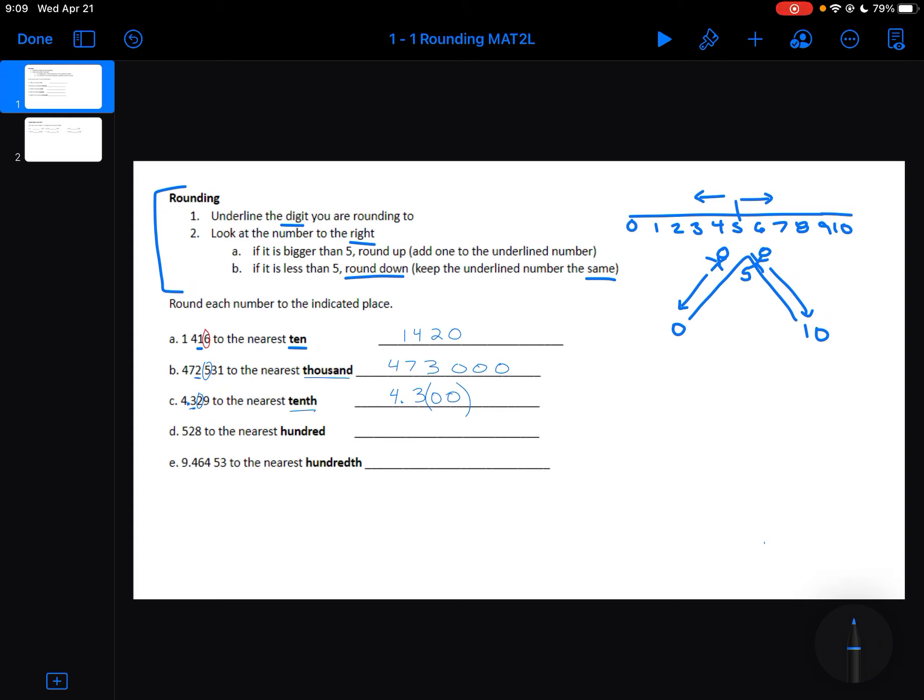Example D. We're going to round 528 to the nearest 100. So I need to figure out which number is in the 100 spot, which is the 5. Looking at the digit immediately to the right, I've got a 2 that is less than 5. So 5 is going to stay the same, my underlined digit. And my numbers after the underlined digit are going to round to 0, or I'm going to write as 0.